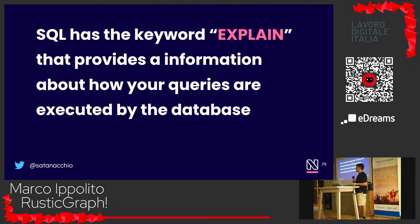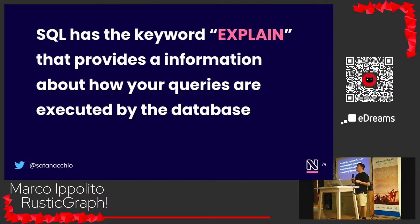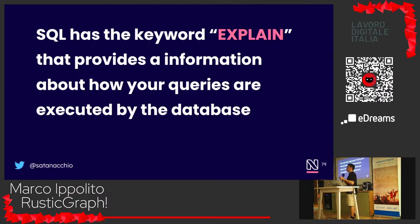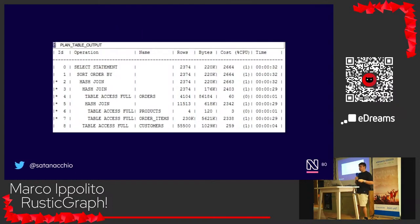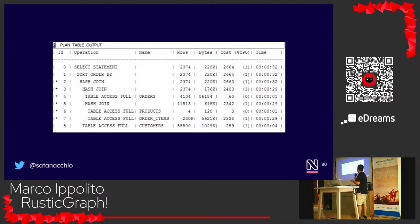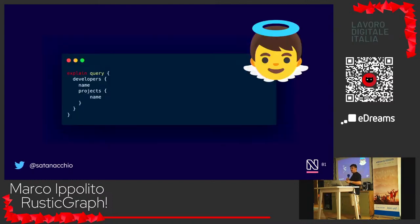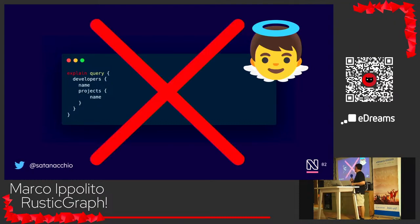SQL — another query language — has the EXPLAIN keyword. Almost everybody has used it, and you know it's crucial to understand why a query is slow and what it's actually doing. For every single step you can see time, resource usage, rows scanned, etc. I really wish there was an EXPLAIN keyword in GraphQL, but there isn't — and there isn't for a reason.